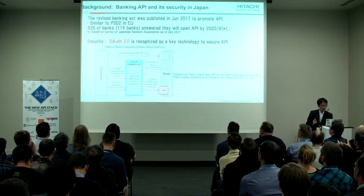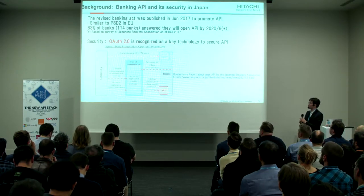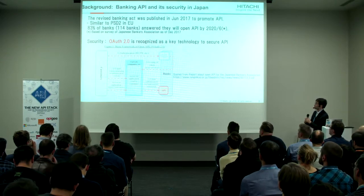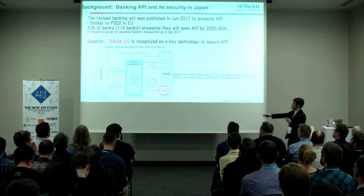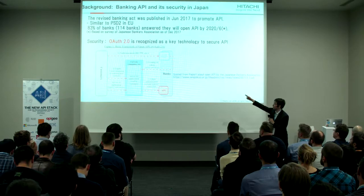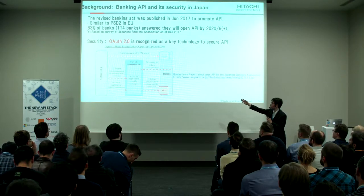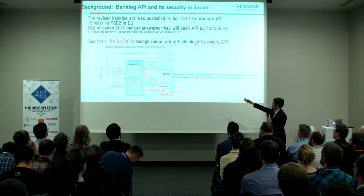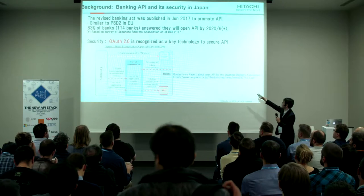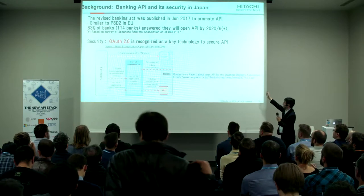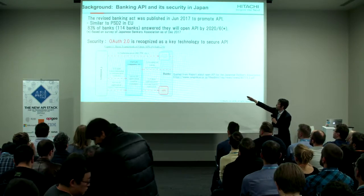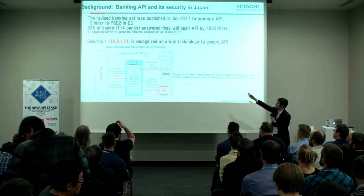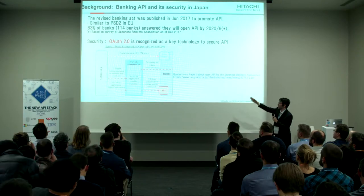About security, OAuth 2.0 is described as a key technology. This is the first figure of a report from the Japanese Bankers Association, and it says the basic framework uses OAuth 2.0.